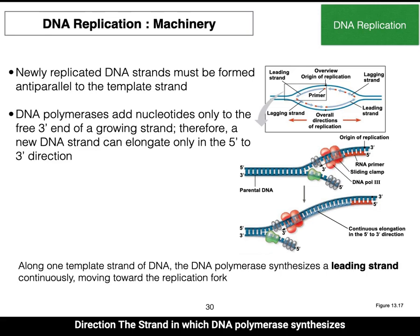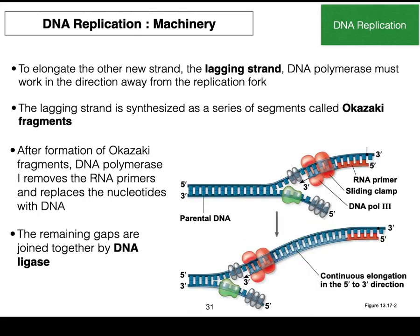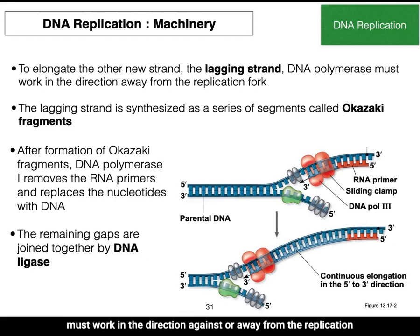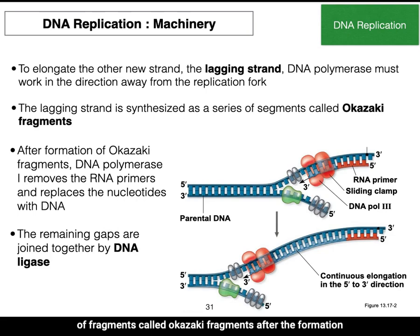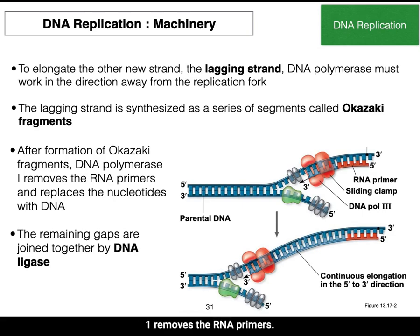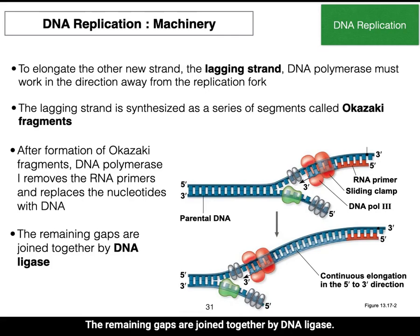The strand on which DNA polymerase synthesizes the new continuous strand moving toward the replication fork is known as the leading strand. To elongate the lagging strand, DNA polymerase must work in the direction away from the replication fork. Lagging strand synthesis is done in a series of fragments called Okazaki fragments. After their formation, DNA polymerase I removes the RNA primers and replaces the nucleotides with DNA, and the remaining gaps are joined together by DNA ligase.